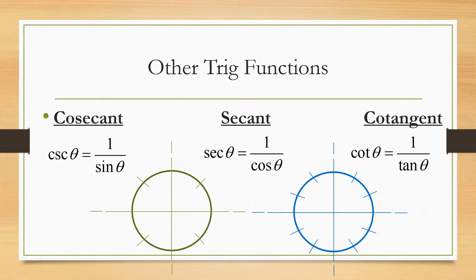Now that we've mastered the three original trig functions — sine, cosine, and tangent — we're going to focus on cosecant, secant, and cotangent. These are the inverses of sine, cosine, and tangent. Cosecant is the inverse of sine, so whatever you get for sine, just flip its answer to get cosecant. Secant is the inverse of cosine — just flip the cosine answer. Cotangent is the inverse of tangent.